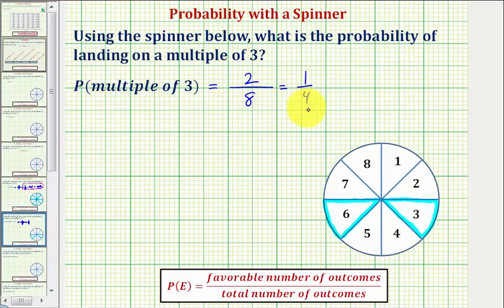We often see probability expressed as a decimal or a percentage, so let's also show those. We should recognize one-fourth is equivalent to twenty-five hundredths or zero point two-five.